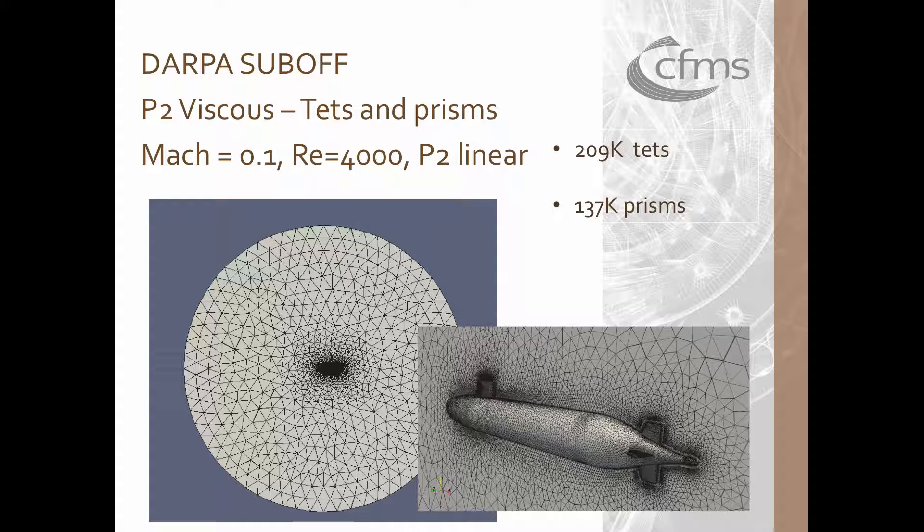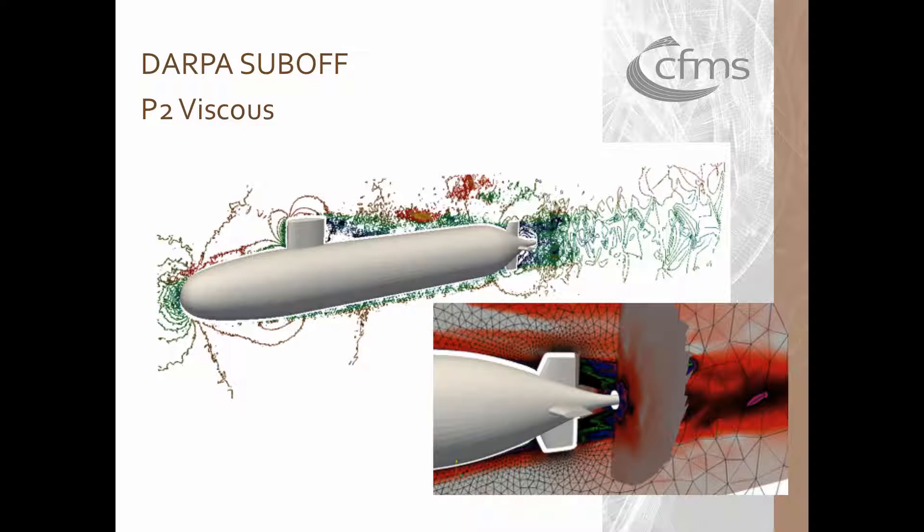The vortical flow around the simple DARPA SUBOFF model has been computed at Reynolds number 12,000. The free stream Mach number was set to 0.1 and the mesh consisted of 340,000 cells unstructured mixed tets and prisms in order to prove the usage of the unstructured meshes using higher-order flux reconstruction methods for complex geometries.